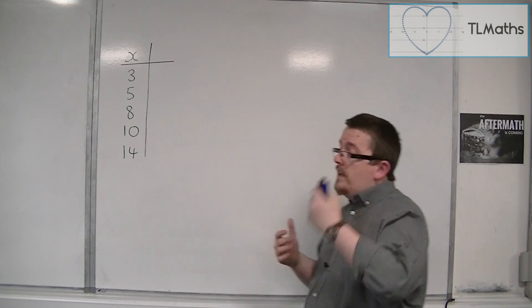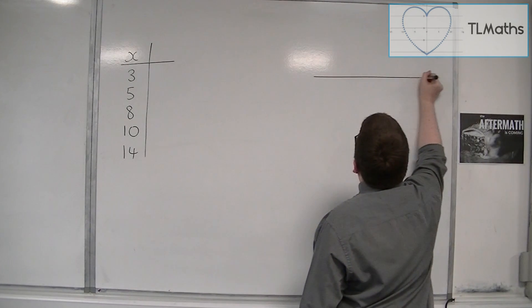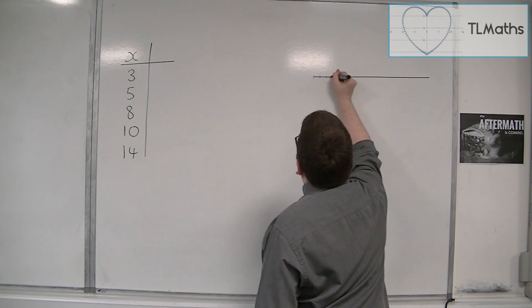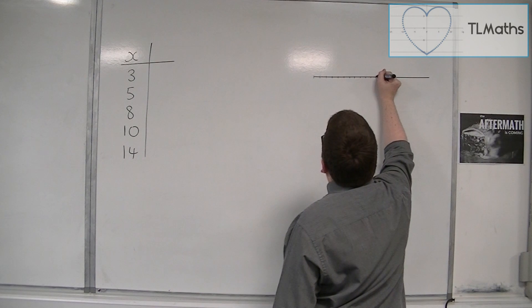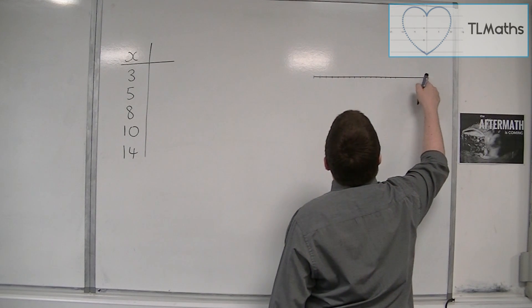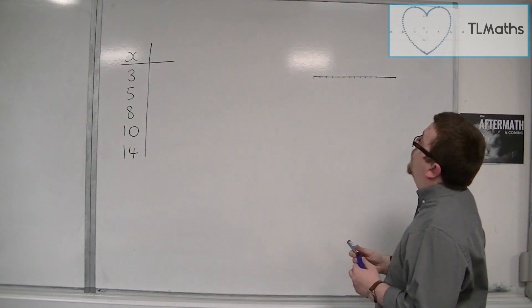Now the best way to really visualize this is to draw a number line. So if I go 0, 1, 2, 3, 4, 5, 6, 7, 8, 9, 10, 11, 12, 14, 15. So let's go up to 15. There's my number line.